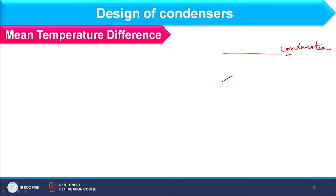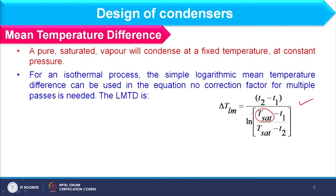The exit temperature of the coolant will never exceed the saturation temperature of the condensate. To find mean temperature difference in this case, we use the log mean temperature difference (LMTD), where T_saturation is the condensation temperature and T1 and T2 are the inlet and outlet temperatures of the coolant. This LMTD applies regardless of whether counter-current or co-current flow is used.